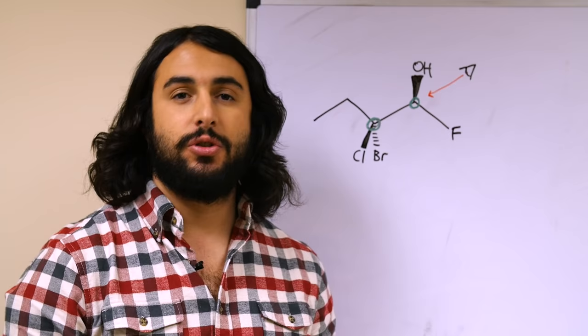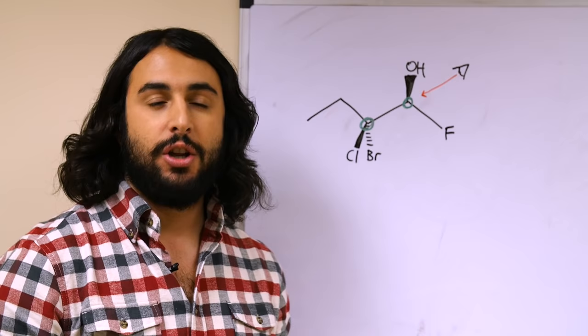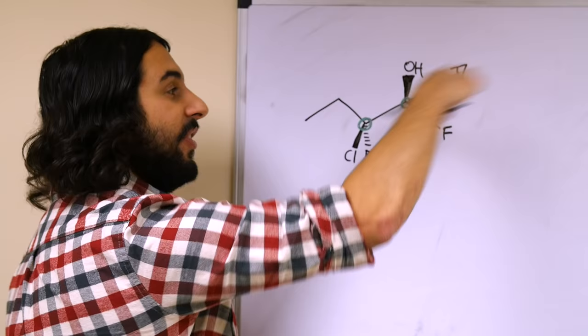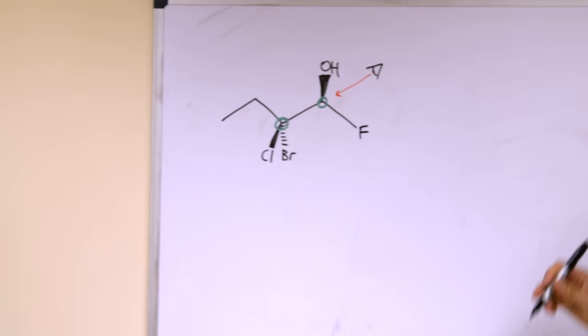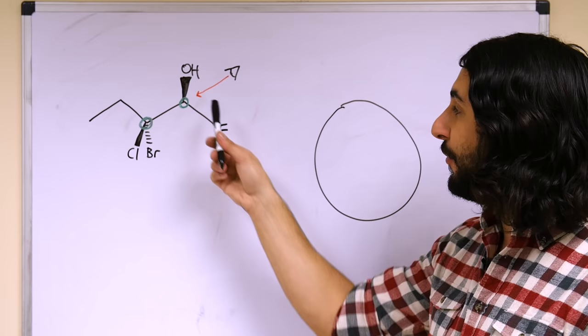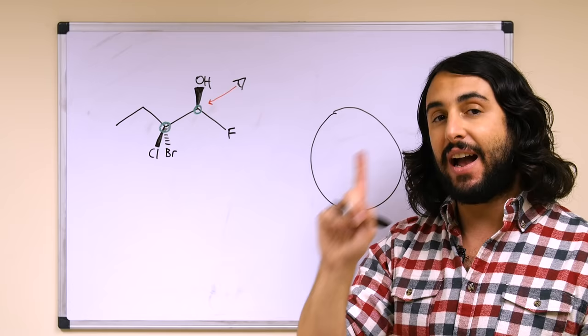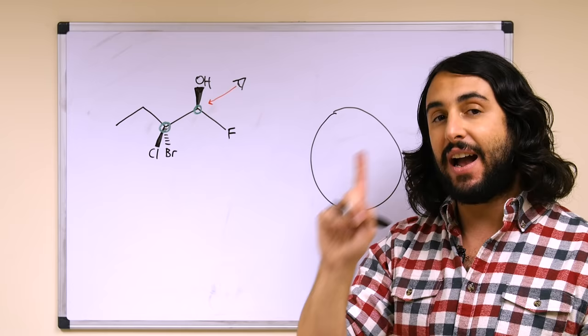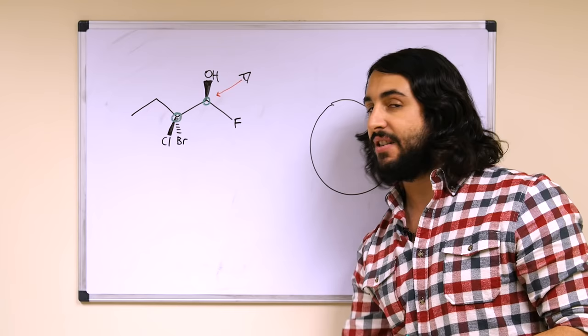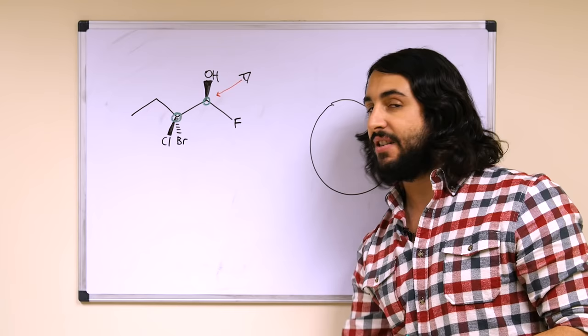In your class you're probably going to be asked to draw Newman projections, so let's go over an example. I drew an arbitrary molecule. In order to draw a Newman projection you're going to have to agree about which bond you are discussing and which direction you are looking at it from. This means we want to look directly down this bond from this direction, so this is the front carbon and this is the back carbon. Here's our circle representing the front carbon. What are the three groups projecting from the front carbon? We have a fluorine atom, we have a hydroxyl group, and then we have an implied hydrogen on a dash bond — don't forget the implied hydrogen.